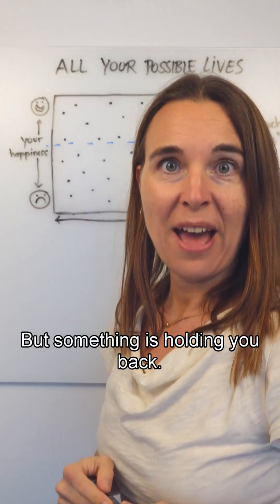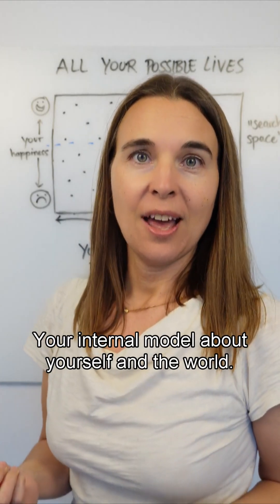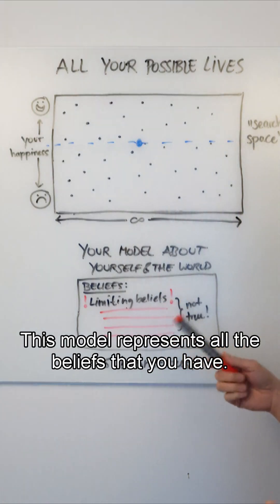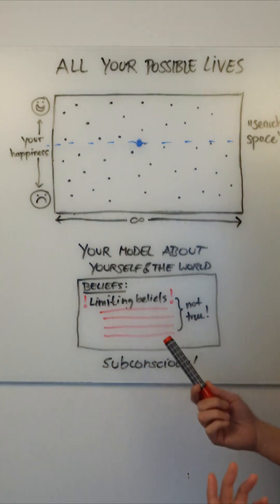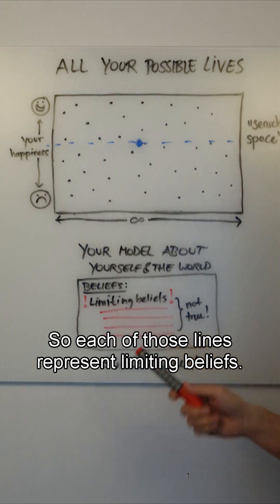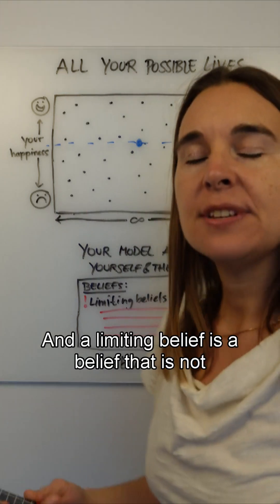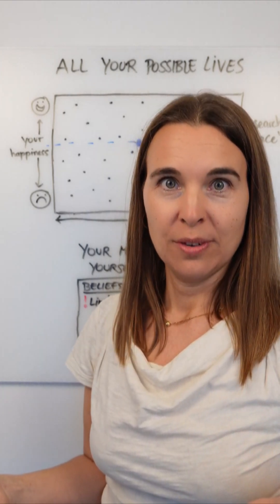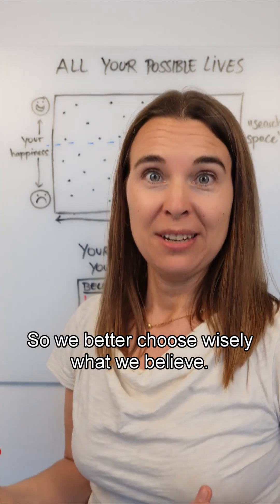But something is holding you back. Your internal model about yourself and the world. This model represents all the beliefs that you have. And most beliefs are limiting beliefs. So each of those lines represent limiting beliefs. And a limiting belief is a belief that is not necessarily true. Anything we believe, we're going to experience as being true. So we better choose wisely what we believe.